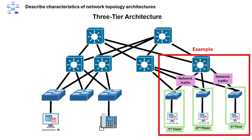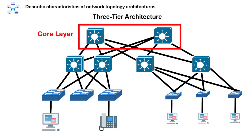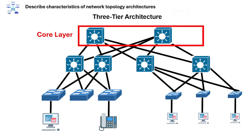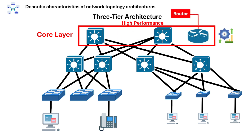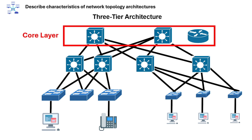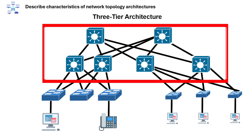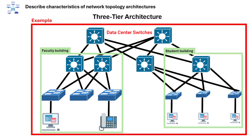The top tier of this architecture is the core layer. Its purpose is to provide fast, reliable backbone connectivity between distribution layers. Devices used in this layer are high-performance routers or switches. The core layer's functions are high-speed switching, redundancy, and fault tolerance. An example is a data center switch that interconnects different parts of the campus network.